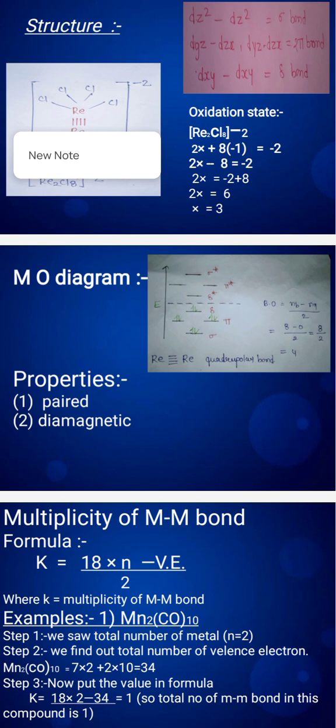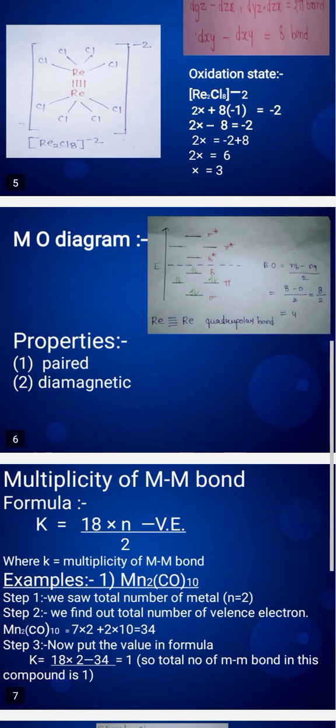In the MO diagram, we fill electrons: first sigma, then pi, then delta. All electrons are bonding electrons, and the bond order is 4. That means we have two metals with four bonds between them.